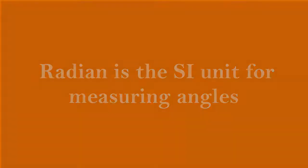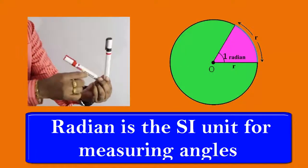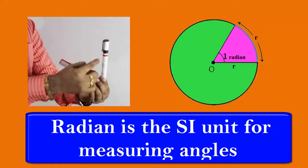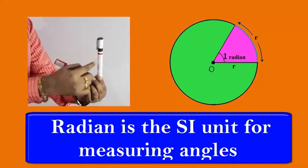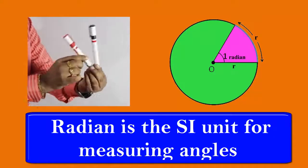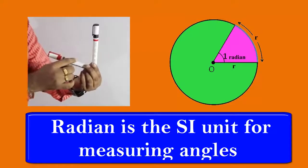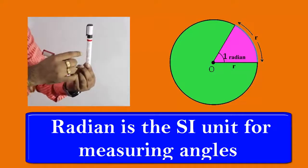i.e. to measure an angle. This amount of rotation, which is the SI unit, is radian — degree is not. Although degree is a very common unit.